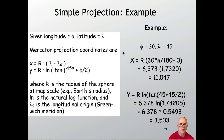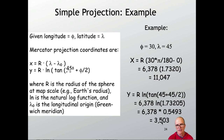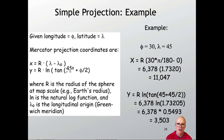The Mercator projection formula is fairly straightforward. The x value is the radius of the earth times (λ − λ₀), the longitude minus a base longitude. The y value is the radius of the earth times the natural log of the tangent of (45° + φ/2), where φ is the latitude. So for a latitude of 30° and longitude of 45°, running through the formula gives x = 11,047 and y = 3,503. You can run every coordinate pair through this projection engine to get its Cartesian coordinates.